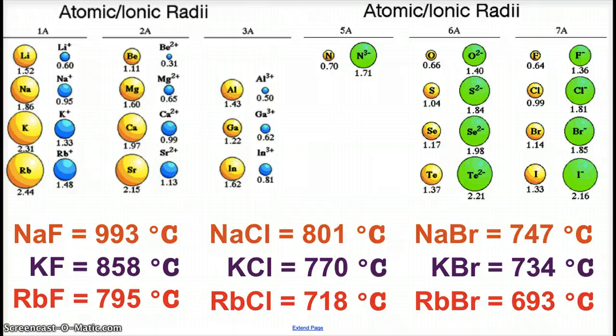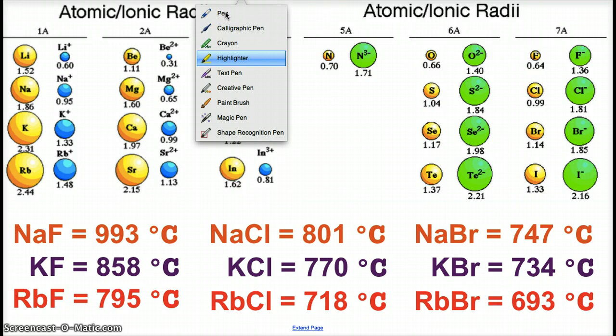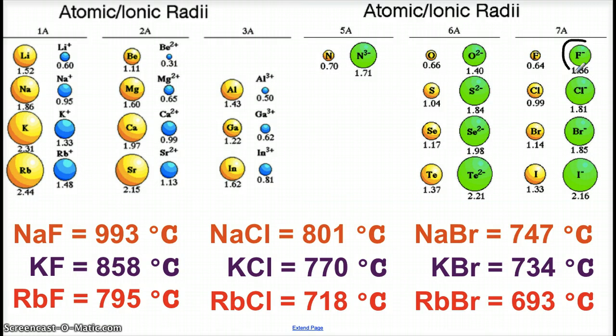Because of these distances, we can see some more melting point trends. Sodium fluoride, potassium fluoride, rubidium fluoride—we're looking at the fluoride ion. The fluoride ion is over here, radius of 1.36 angstroms. When we look at sodium, potassium, and rubidium, those ions are getting larger because as you go down the group, more energy levels are occupied.